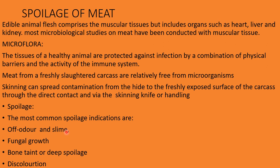The most common indications of spoilage are off-odor and slime. This slime is due to the growth of aerobic bacteria on the surfaces of the meat. The second indication is fungal growth, which is favored at water activities too low for bacterial growth. Then there is bone taint — off-taste and off-odor is called taint or deep spoilage — occurring because of anaerobic or facultative microorganisms. The last one is discoloration, primarily due to alteration of myoglobin, the muscle pigment.